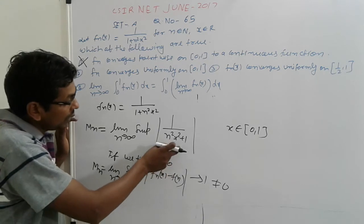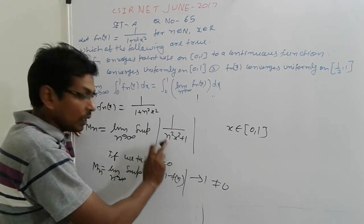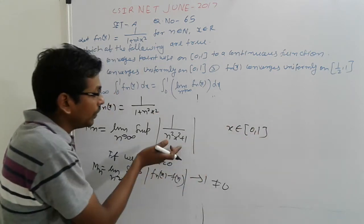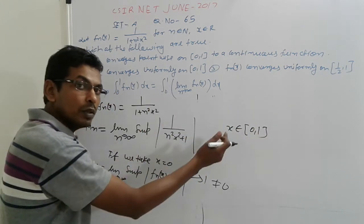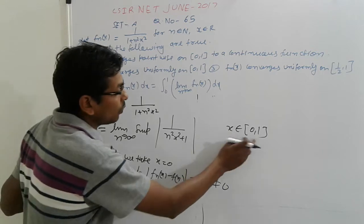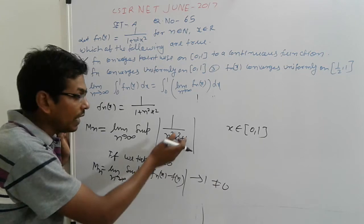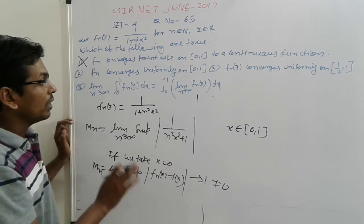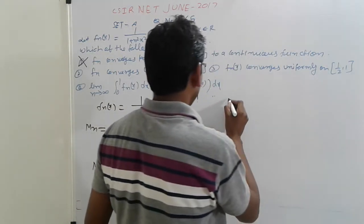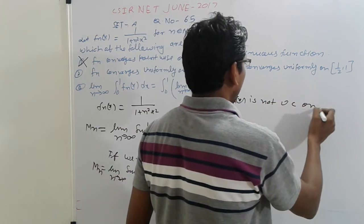Simple logic: on the interval [0,1], if we put x equal to 0, M_n does not tend to 0. If M_n tended to 0 for all points in [0,1], then f_n would be uniformly convergent. But at the point x = 0, M_n is not tending to 0. Therefore, f_n(x) is not uniformly convergent on [0,1] by the M_n test.